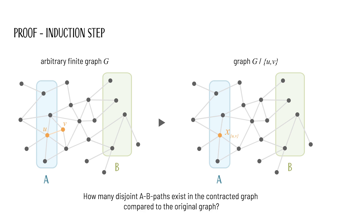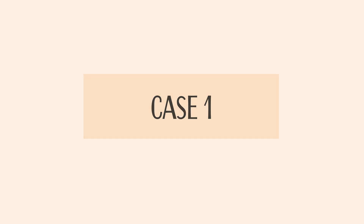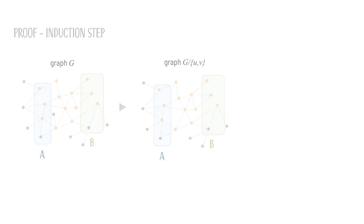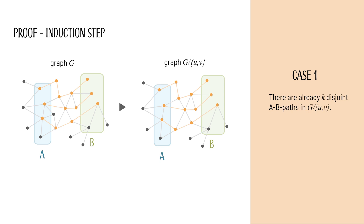So, how many disjoint AB paths exist in the contracted graph compared to the original graph? Case 1: there are already K disjoint AB paths in G/U,V. This means that G also contains K disjoint AB paths.